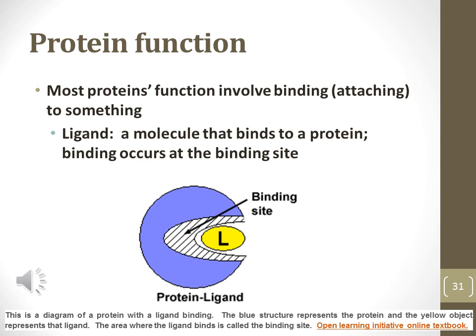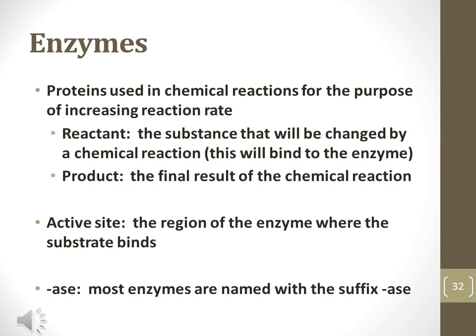Most proteins that interact with other molecules involve a binding site or a point of attachment. A ligand is the term for any molecule that binds to a protein at the binding site. Enzymes increase the rate of a chemical reaction by decreasing the amount of energy needed to carry out the reaction. A reactant is the substance that is altered in some way during a chemical reaction. Reactants are ligands and bind to the binding site. A product is a molecule that is formed by a chemical reaction. Ligands may also be referred to as a substrate and will always bind to the binding site. The suffix -ase is used with most enzymes.